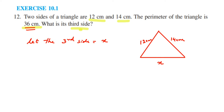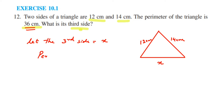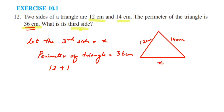We know that the perimeter is nothing but the sum of all three sides of the triangle. The perimeter of the triangle is equal to 36 centimeters. After adding all three sides: 12 centimeters plus 14 centimeters plus the third side, which we have assumed as x, is equal to 36 centimeters.